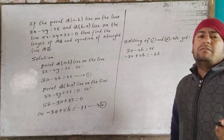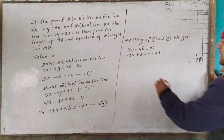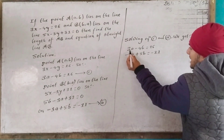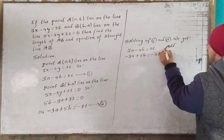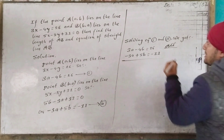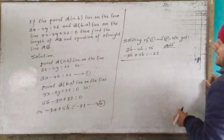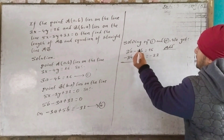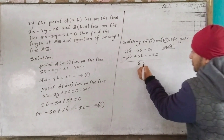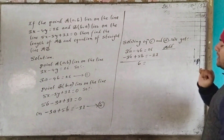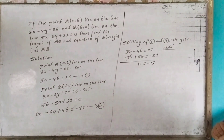Now we can solve using the elimination method. Here 3a and minus 3a cancel. Adding the equations: 5b minus 4b equals minus 31 plus 26, so b equals minus 5.